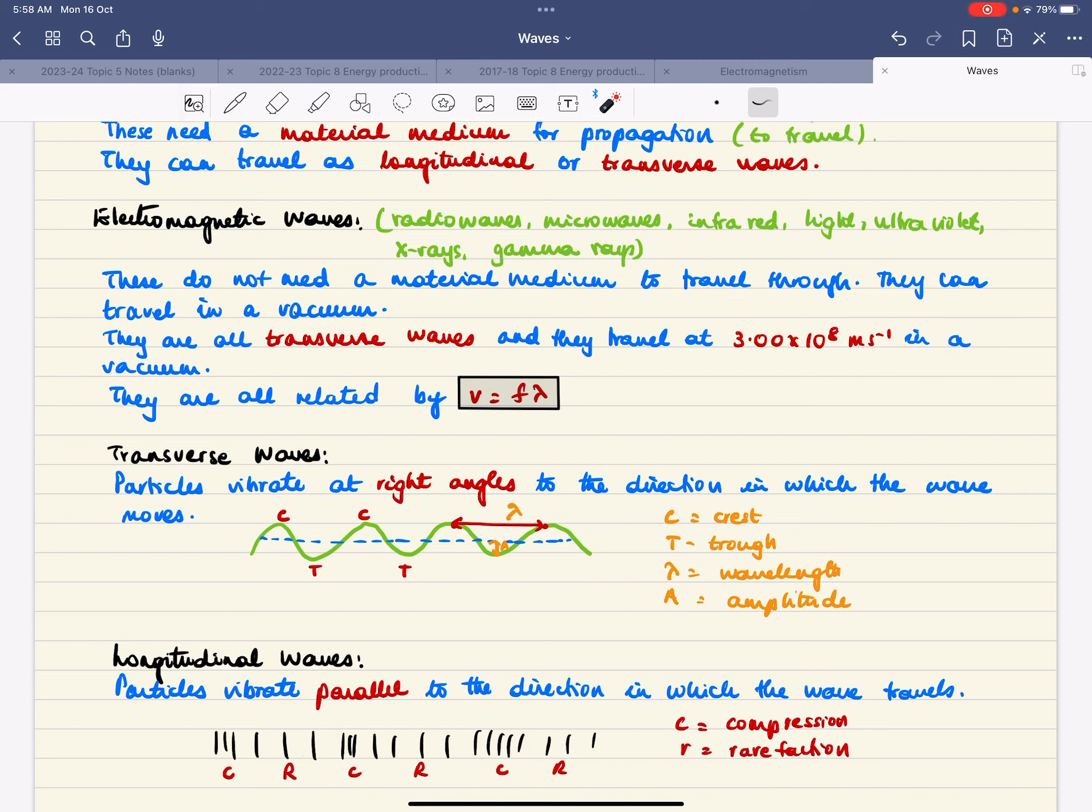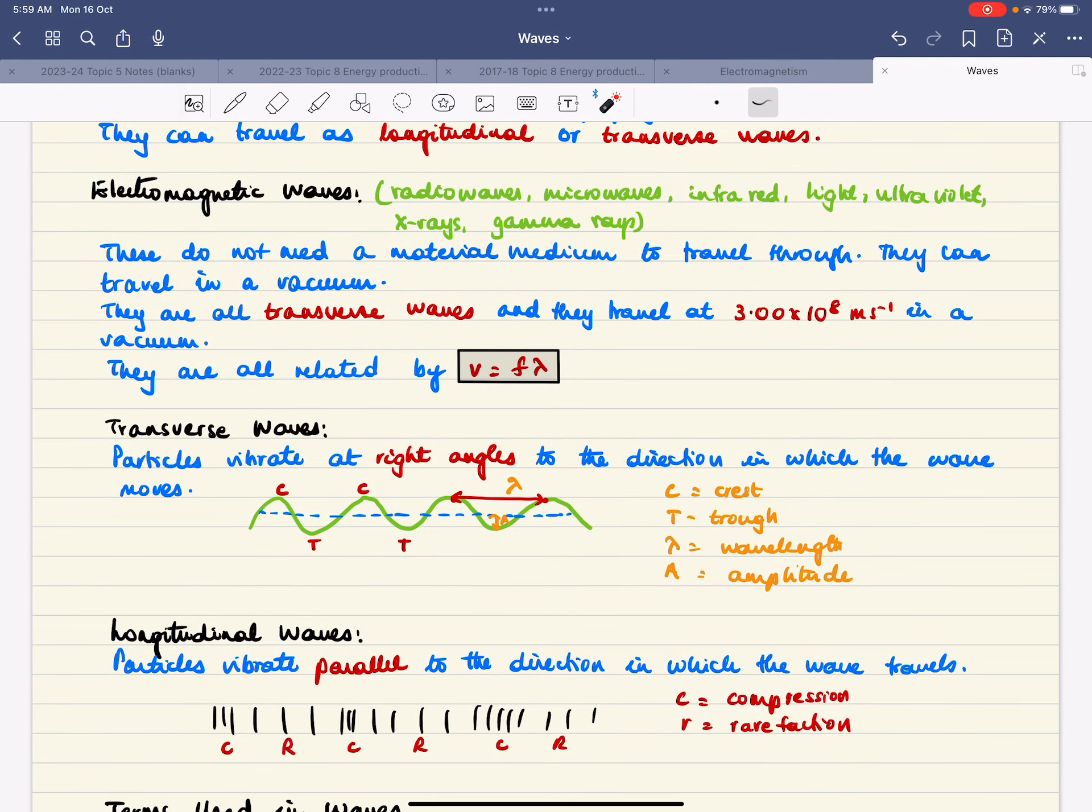Depending on how waves travel, they can be classified as either transverse or longitudinal waves. In a transverse wave, the particles vibrate at right angles to the direction in which the wave moves. That means if the wave is moving forward, the particles are actually moving up and down in simple harmonic motion.